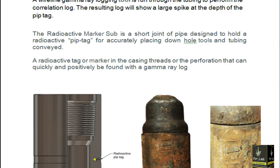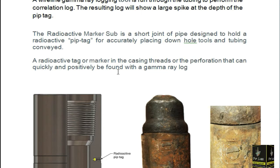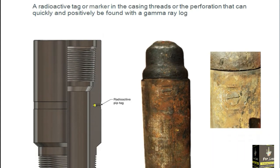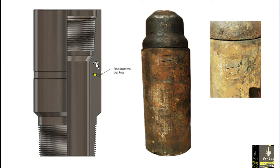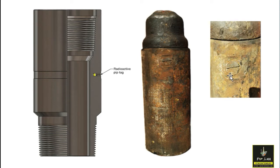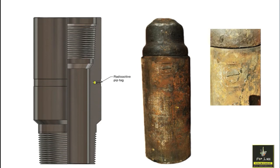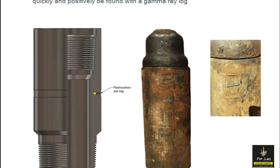The radioactive marker sub is a short joint of pipe designed to hold a radioactive pig tag for accurately placing downhole tools in wireline-conveyed or tubing conveyed perforation operations. The radioactive tag or marker in the casing threads or perforation interval can be quickly and positively identified by a gamma ray log. This is the original image of the tool — this small thing is known as the pig tag, which helps create a large radioactive spike.